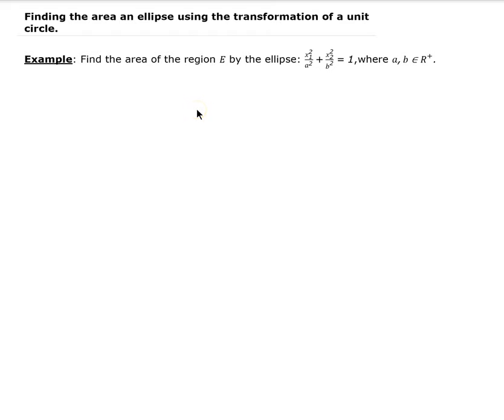In this lesson we're going to find the area of an ellipse using the transformation of a unit circle. To start out, we're going to define, let D be a unit disk, which means that it's going to have a radius of one.